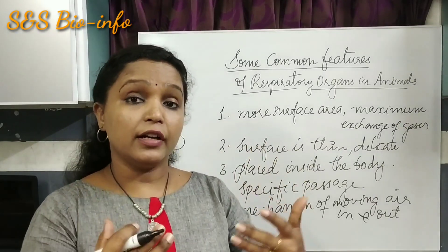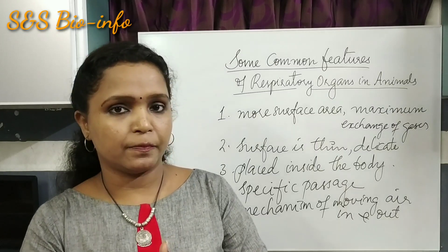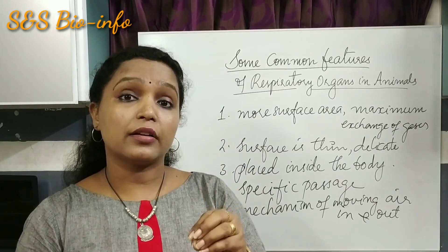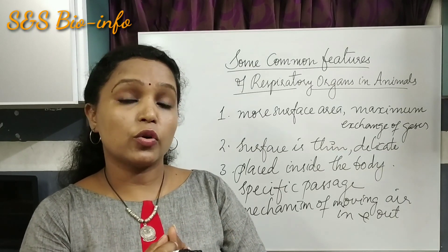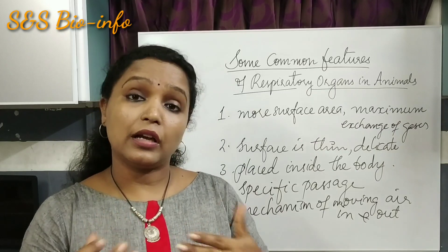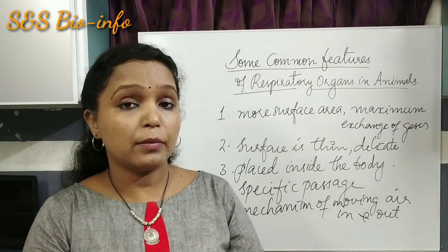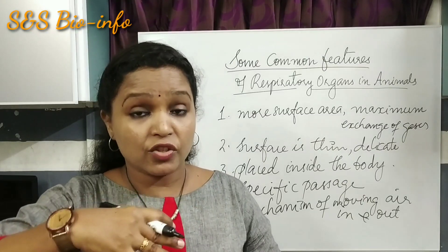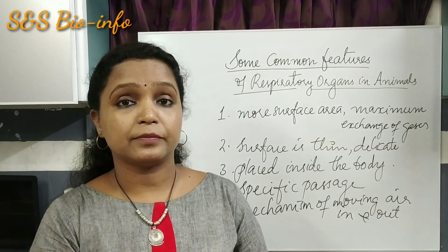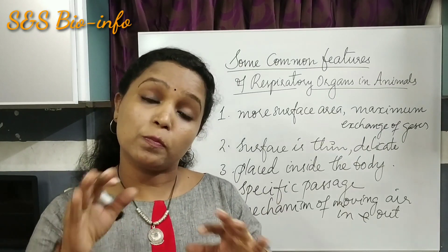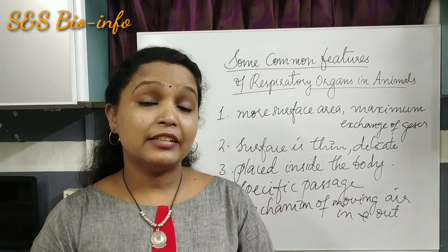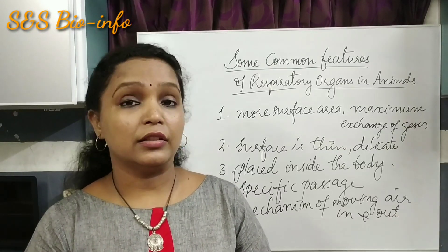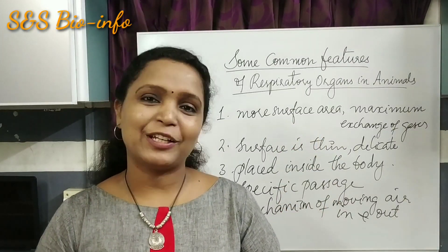Different animals possess different respiratory organs. For example, fish possess gills, which are placed within the body because they are delicate, vascularized organs richly supplied with blood vessels. Lungs in vertebrates — reptiles, birds, and mammals including humans — are also placed within the body to protect the thin membrane of the exchange site. Similarly, trachea in insects are placed within the body. I hope you understood the respiratory organs of various organisms, breathing rate, and the common features of respiratory organs. Thank you and have a nice time.